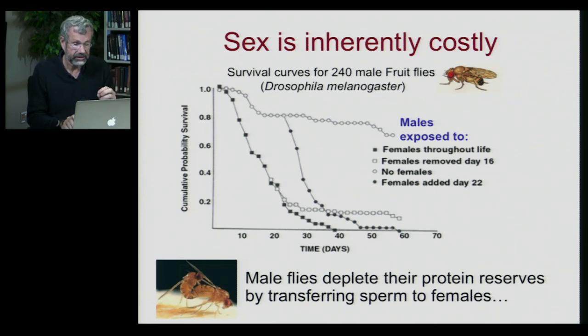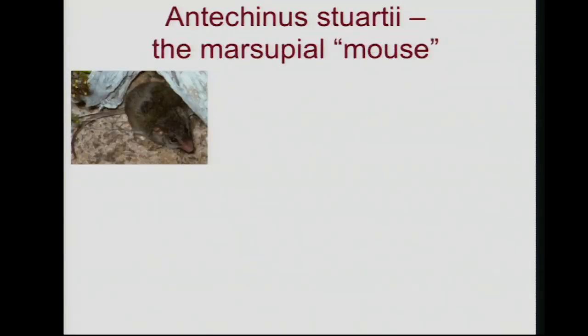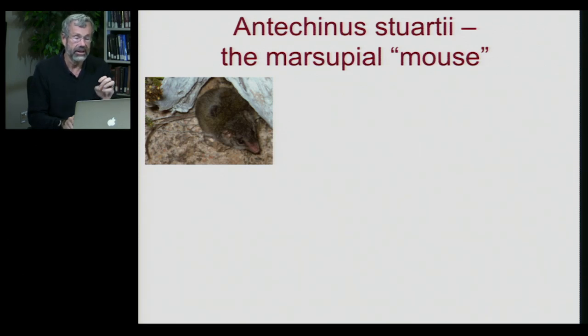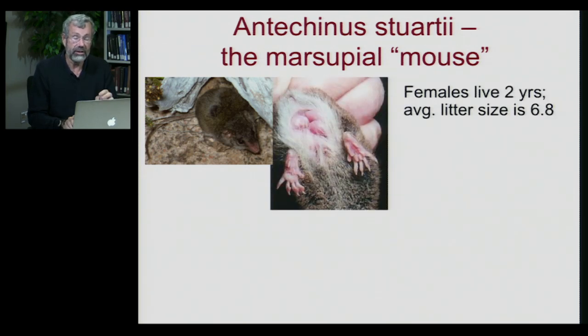There he is in the death act. There are also very clear examples of suicidal trade-offs between survival and reproduction in mammals. Here is Antechinus stewardii, known as the marsupial mouse. This thing looks like a mouse but is actually related to the possum. The females live about two years and have a litter of almost seven babies.